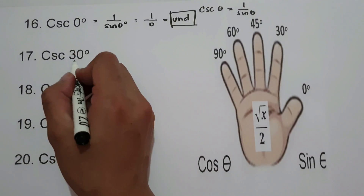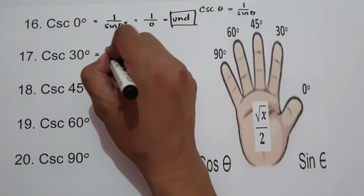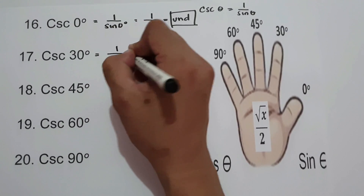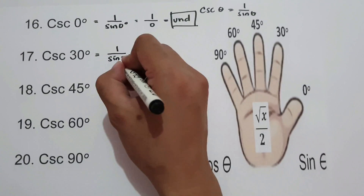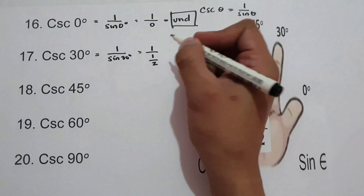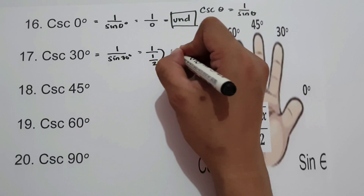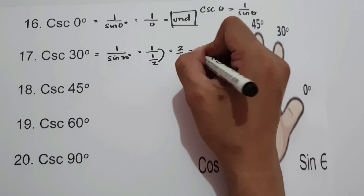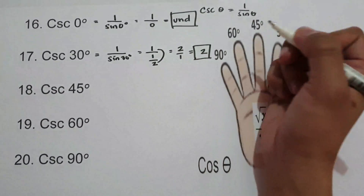For cosecant 30°, that is 1 over sine 30°, which is 1 over 1/2. Multiplying gives 1 times 2 over 1, that is 2. Cosecant 30° is 2.